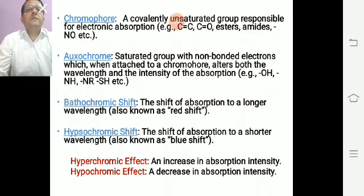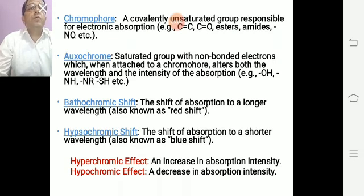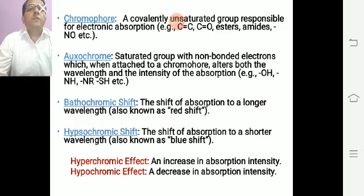Here is some terminology used in UV spectroscopy. First, chromophore: a covalently unsaturated group responsible for electronic absorption — for example, C=C, C=O, esters, amides, NO, etc. An auxochrome is a saturated group with non-bonding electrons which, when attached to a chromophore, alters both the wavelength and the intensity of absorption — for example, OH, NH, NR, SH, etc.